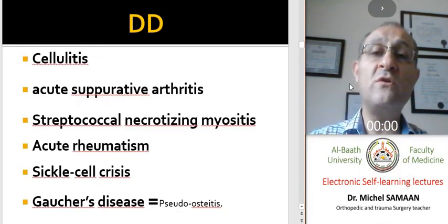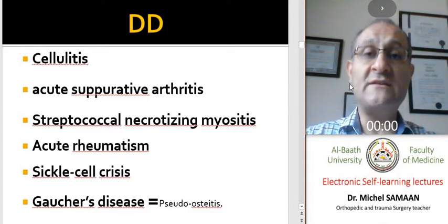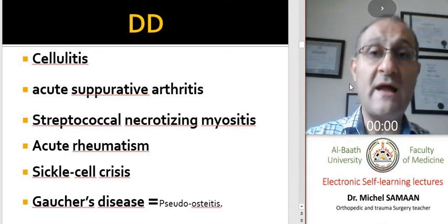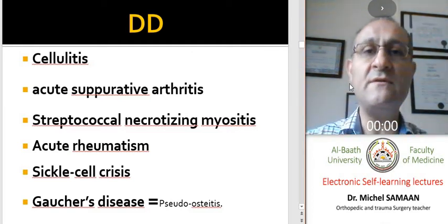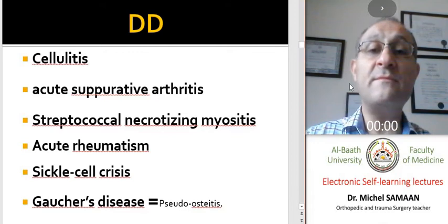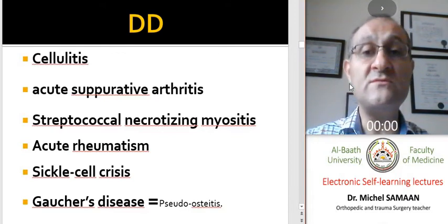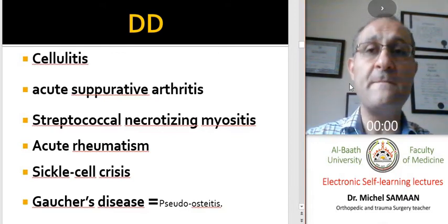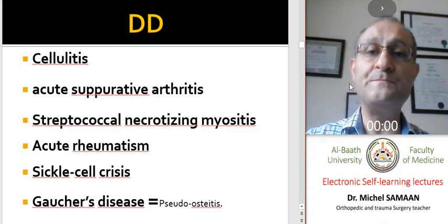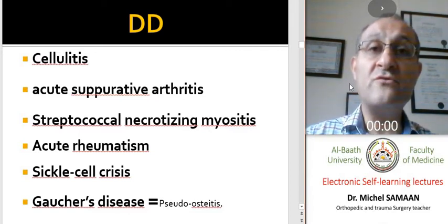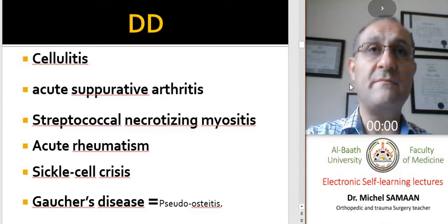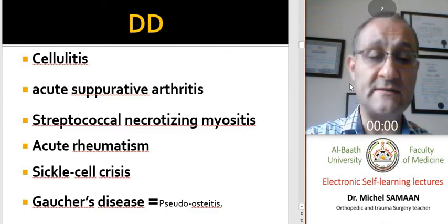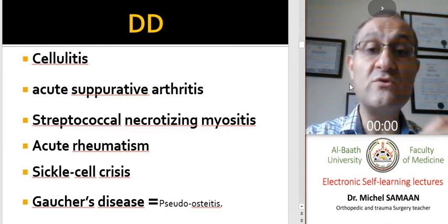We should always differentiate osteomyelitis from cellulitis, from acute septic arthritis — this is very important because the treatment differs. Also differentiate from streptococcal necrotizing myositis, which is an emergency case requiring treatment in the emergency department and operating room, from acute traumatism especially in children, sickle cell crisis, and Gaucher disease, which may cause pseudo-ostitis.